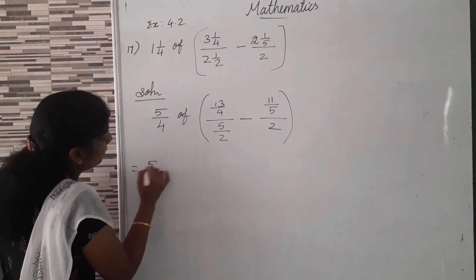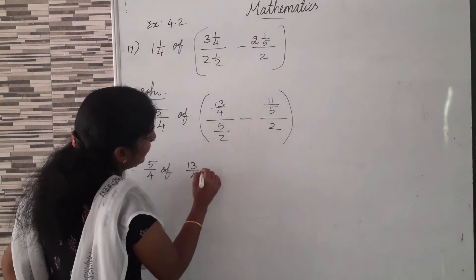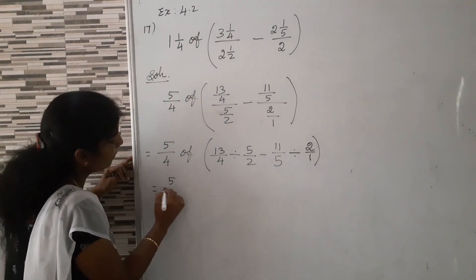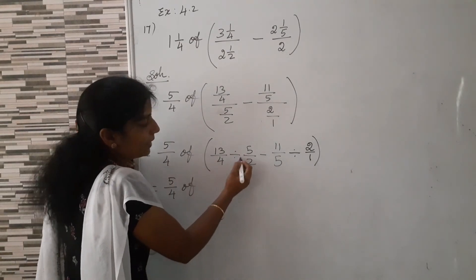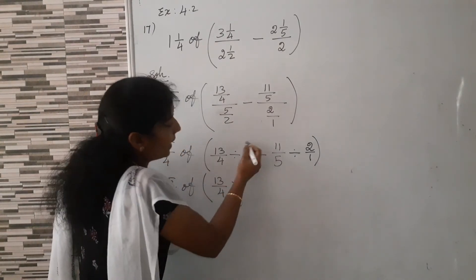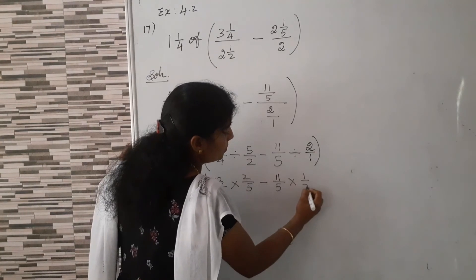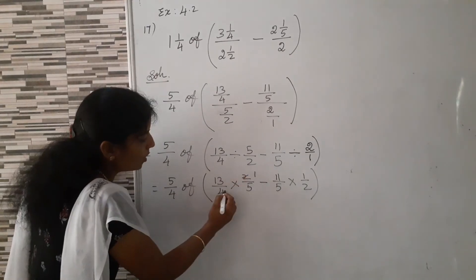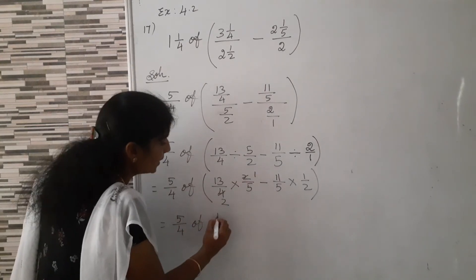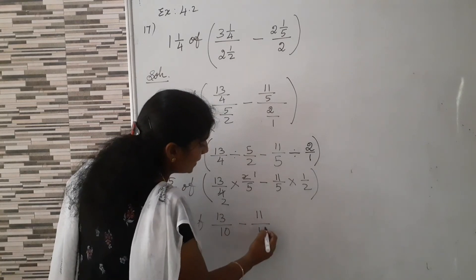Now, equal to: 5/4 of. We can write division: 13/4 divided by 5/2 becomes 13/4 multiplied by the reciprocal of 5/2, which is 2/5. Minus 11/5 into 1/2. Now we can cut: 2 and 4 using 2 tables — 1 two is 2, 2 into 4. Equal to: 5/4 of 13 into 1 is 13, by 5 into 2 is 10. Minus 11 into 1 is 11, by 5 into 2 is 10. Now we have the same denominator.